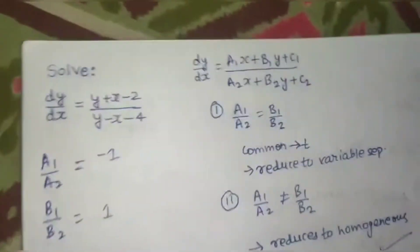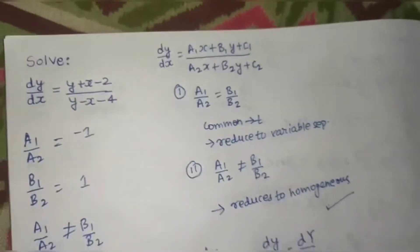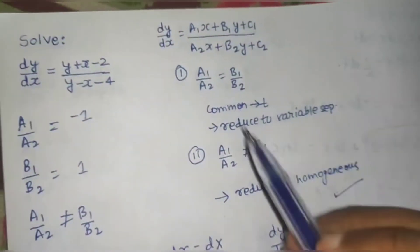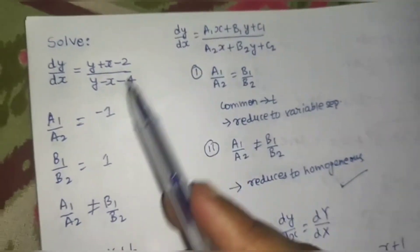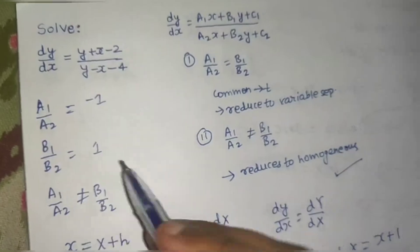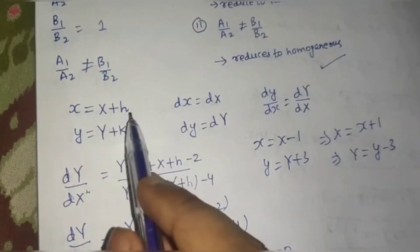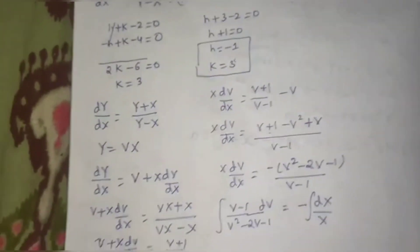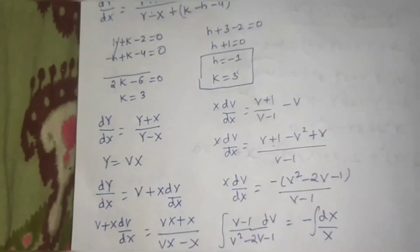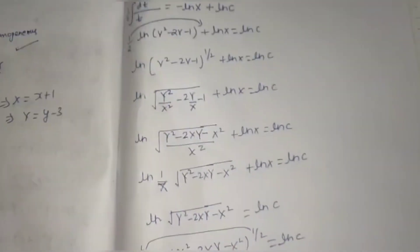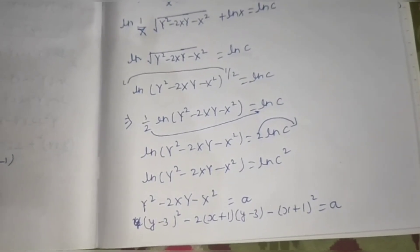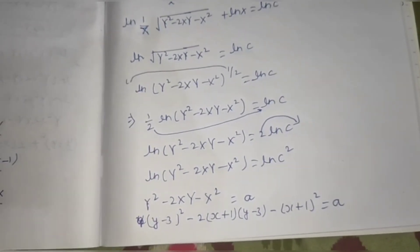This question was similar to the previously solved one. Whenever you see this type of question, identify which of the two categories it belongs to, then follow the steps: substitute x = X + h and y = Y + k, reduce to homogeneous, which reduces to variable separable, and finally use logarithm rules to reach the final answer. Thanks and have a very nice day!